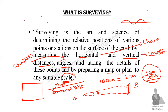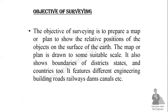When it comes to elevation, we discuss elevation information at various points. Points with the same elevation can be joined to form contour lines. The objective of surveying is to prepare a map or plan to show the relative position of objects on the surface of the earth, drawn to some suitable scale.